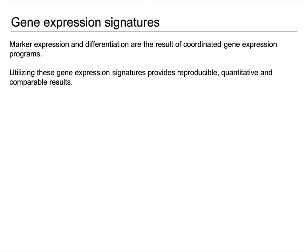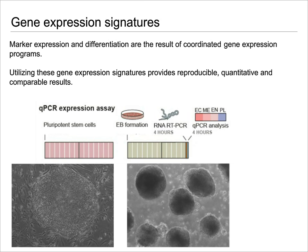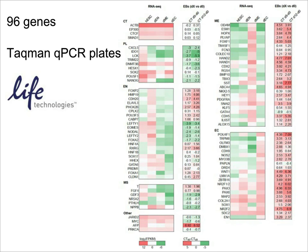This assay should be very simple, so we've spent some time developing a way of using random EB differentiation followed by qPCR to characterize these expression signatures. This particular signature panel contains 96 genes. It's on the TaqMan qPCR platform and is available at Life Technologies, or now Thermo Fisher. I won't have time to run through all the different genes on the platform, but I just wanted to highlight a couple of key concepts.